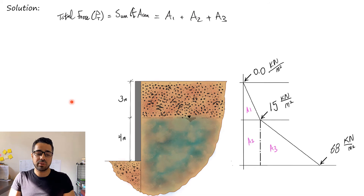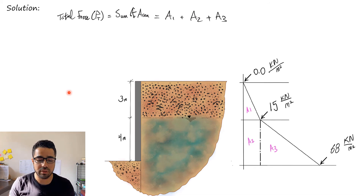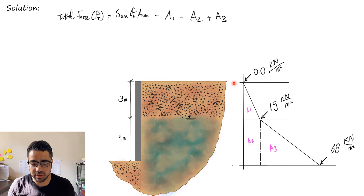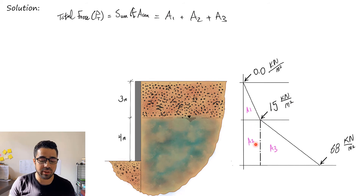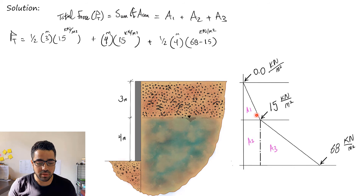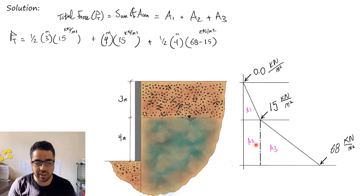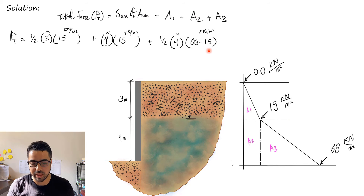To find the total force, we calculate the areas of the stress diagram. We divide the shape into three parts: a triangle for Layer 1, a rectangle and a triangle for Layer 2. Area 1 (triangle): (1/2) × 3 × 15 = 22.5. Area 2 (rectangle): 4 × 15 = 60. Area 3 (triangle): (1/2) × 4 × (68 − 15) — the width is 68 minus 15 because the rectangle already accounts for the 15 kN/m² portion.